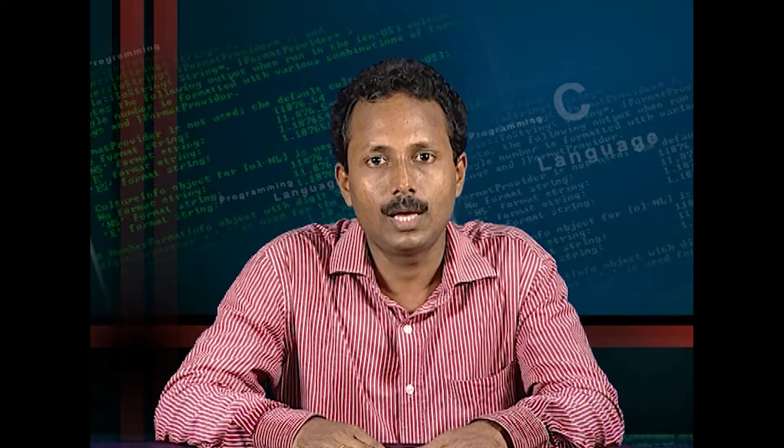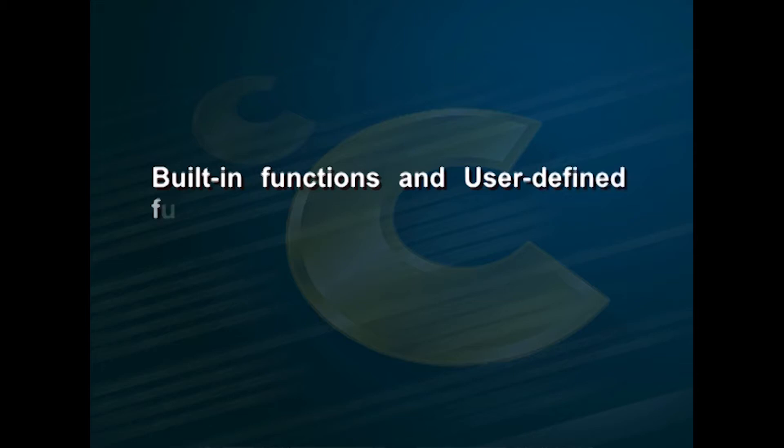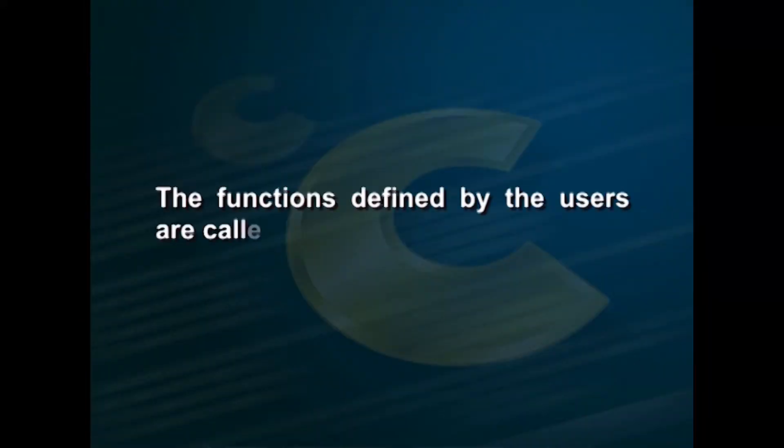A C program is made up of one or more functions. Based on the nature of creation, functions can be classified into built-in functions and user-defined functions. Built-in functions are predefined and supplied with the compiler; these are also called library functions and are available in the C library. The functions defined by users are called user-defined functions. So far, you might have used only one user-defined function called main.